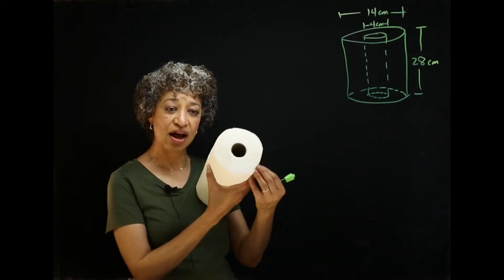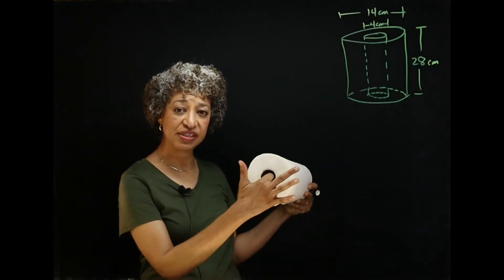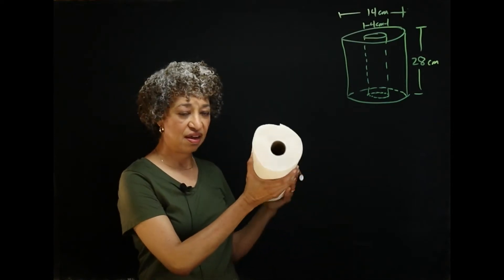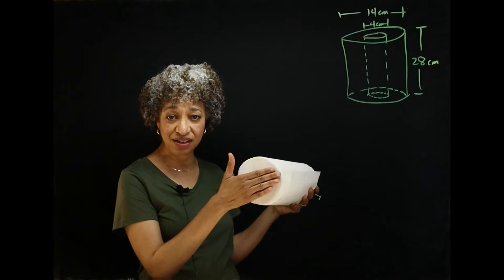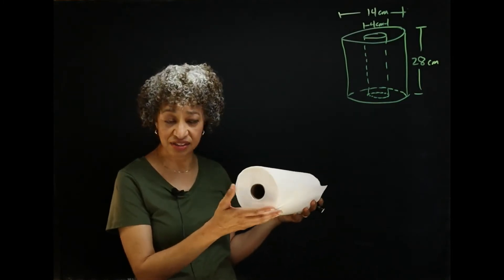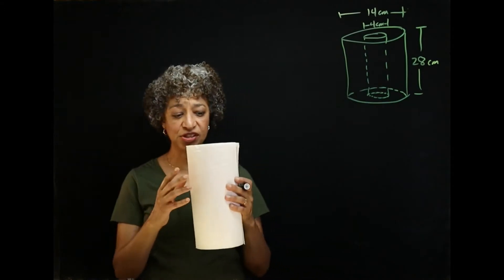We have an outer surface, an inner surface, and we have a surface on each end. They are identical. They are called annuli. Each surface is an annulus. So, we're going to find the area of each of the surfaces.